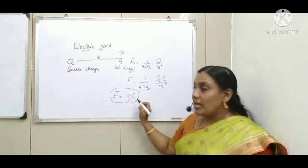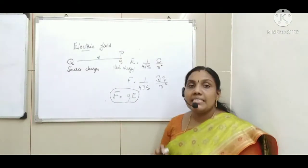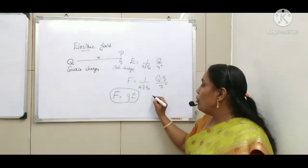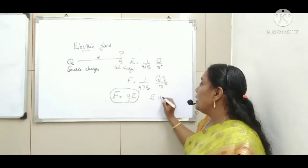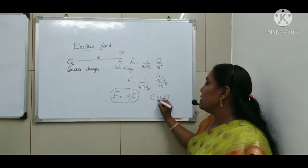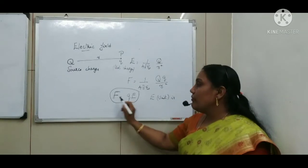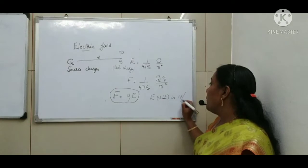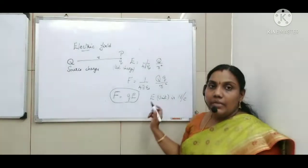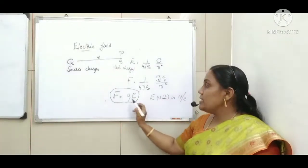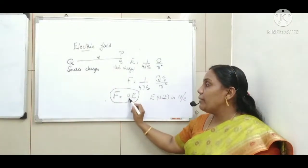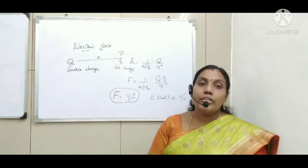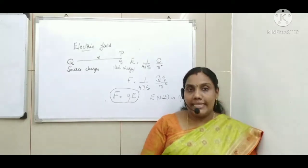Here q is the test charge and E represents the electric field produced by the source charge. Now, what is the unit of electric field? Since E = F/q, the unit of electric field is Newton per Coulomb. There is also another unit of electric field that you will study in the next chapter.